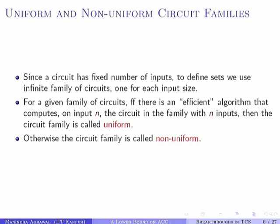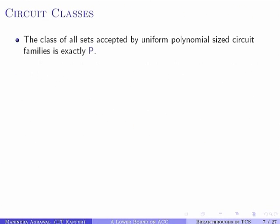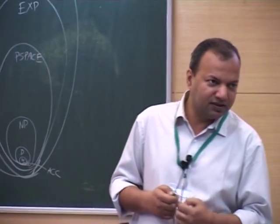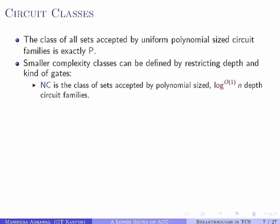These two notions — uniform and non-uniform — will be important in this talk. Using infinite families of circuits we can define classes of sets. The most important one is the class P, which is precisely the class of all sets accepted by uniform polynomial size circuit families. We can also define sub-classes of P. Since we must have polynomial size circuits, we vary the depth parameter. NC is the class of sets accepted by polynomial size and polylogarithmic depth circuits.